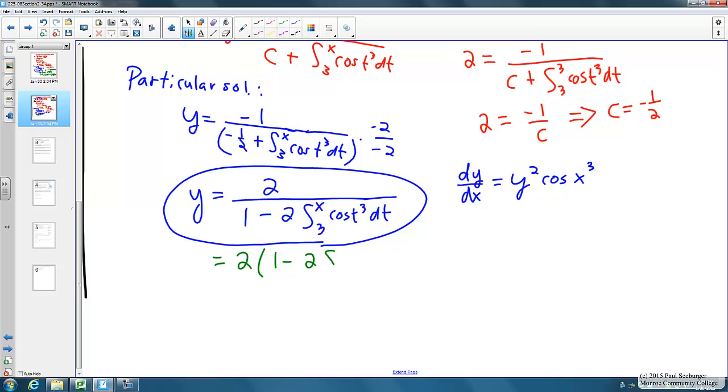This allows us to write dy/dx equal to, bringing the negative 1 down, we've got negative 2 times the base, 1 minus 2 times the integral from 3 to x of cosine of t cubed dt, all raised to the negative 1 minus 1 or negative 2 power. We're going to multiply that by the derivative of the base. That's going to have a negative 2 in it. And then using the second fundamental theorem of calculus, we know the derivative of the integral from 3 to x of cosine of t cubed dt is just going to be cosine of x cubed.